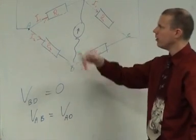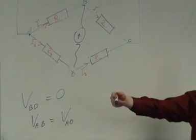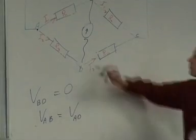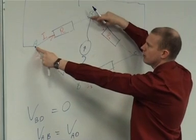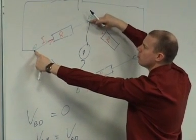Now, I want to ultimately finish up with a formula that relates resistances, R1 over R2, is R3 over R4. How do I bring in resistances in here? The current. Instead of saying VAB, what can I say? I1. I1. I1 R1. R1.